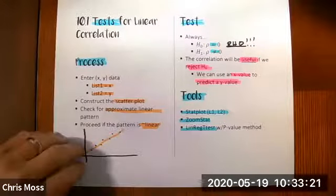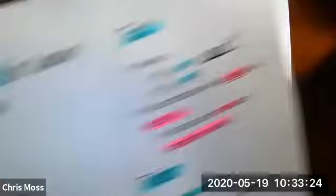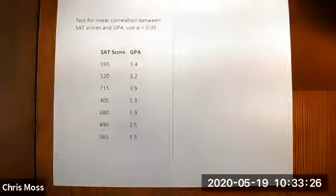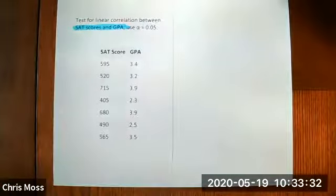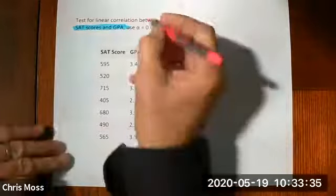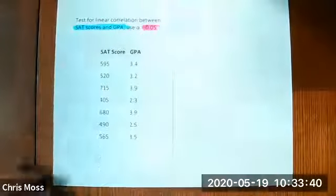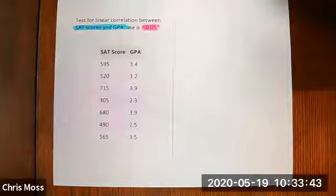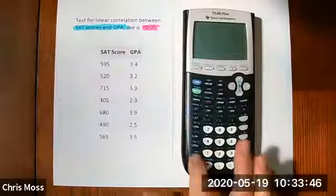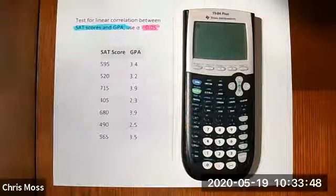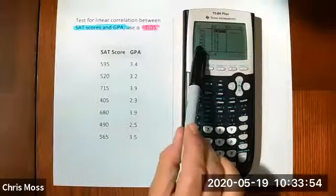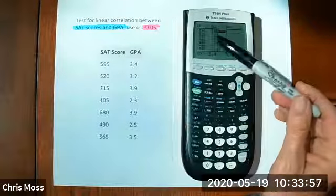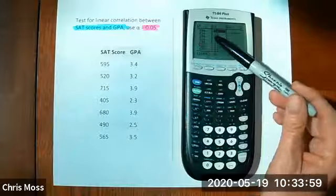Now, let's take a look at an example, and we'll run through everything. We're going to test for linear correlation between SAT scores and GPA. We have a level of significance 0.05. Now, the first thing we'll do before we test is to take a look at the scatter plot. So let me run through those keystrokes. I have my X data in list one, my Y data in list two, SAT, GPA.